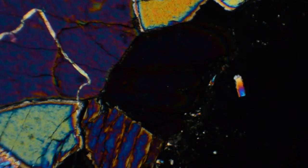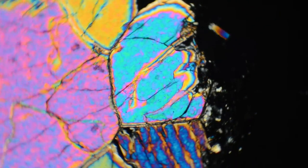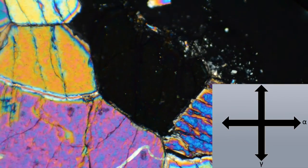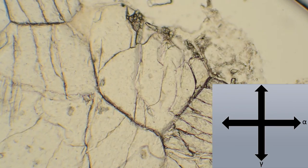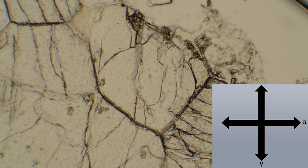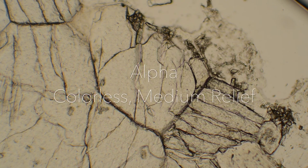Next, I put my cross polarizer in and rotate another 90 degrees counterclockwise to the next extinction position. This aligns alpha with the lower polarizer. Again, without moving the stage, I can observe color and relief in plain polarized light. Along alpha, our grain is colorless with medium relief.